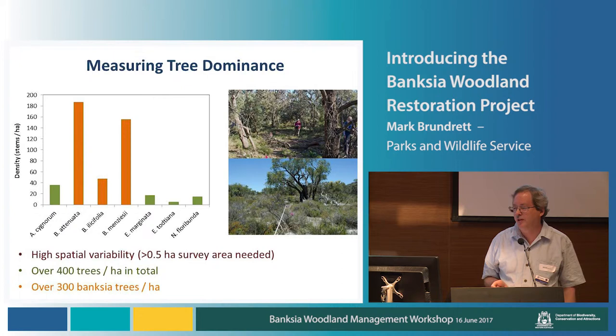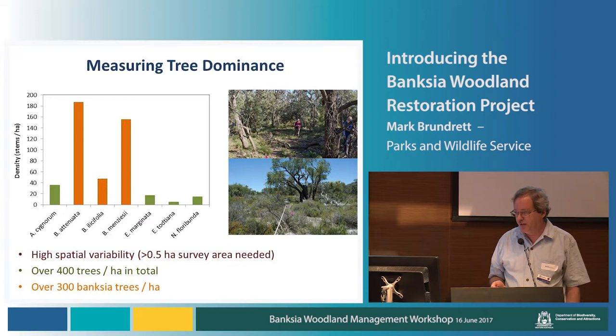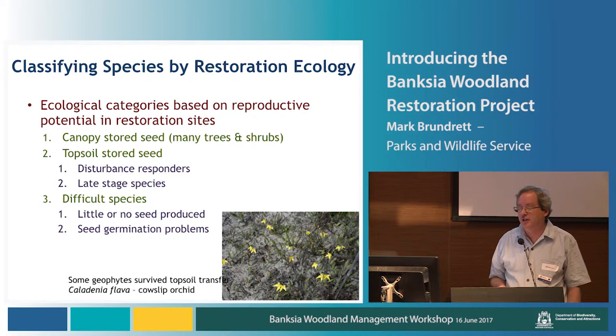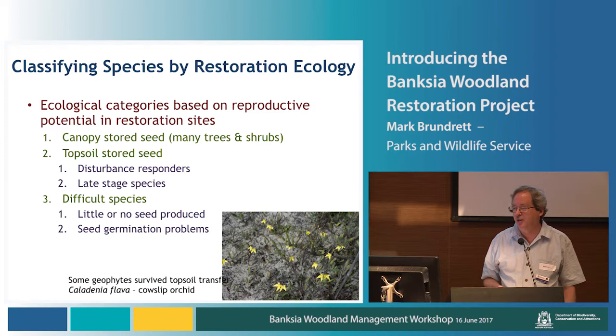The tree data shows that, as you'd expect, the three banksia species are relatively dominant in this banksia woodland, measured as stems per hectare. We've also got eucalypts, adenanthos, and nuytsia — the Christmas tree. We've done the same thing with the understory as well. Species were ranked according to whether or not they're likely to return from topsoil, or whether we need to collect seed for them. This is all based on literature. We also identified difficult species where, from past experience, we were unlikely to get much seed from collectors, or the seed doesn't germinate well in the nursery.